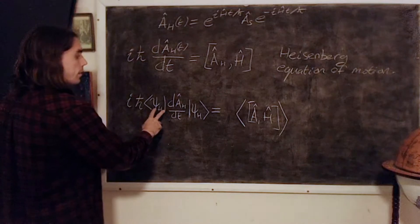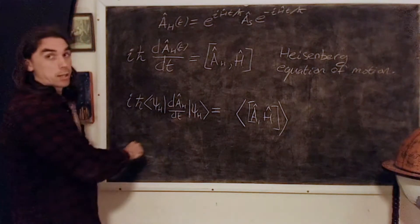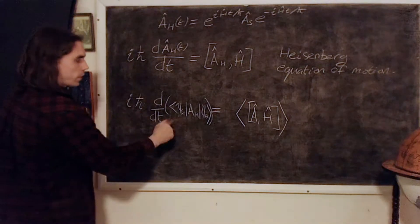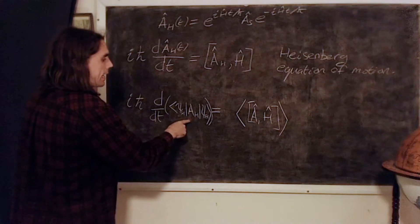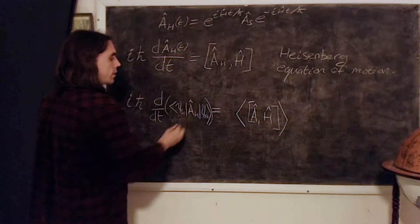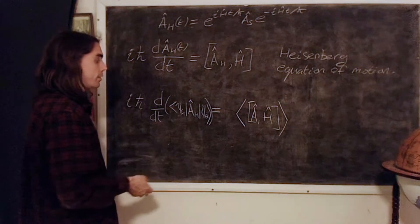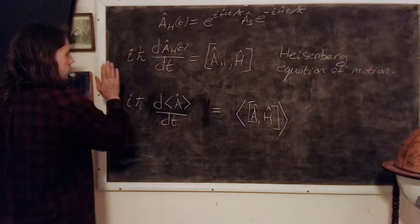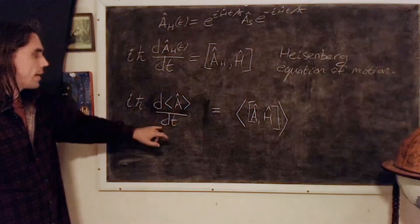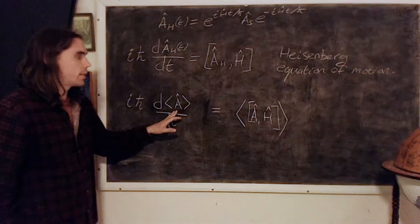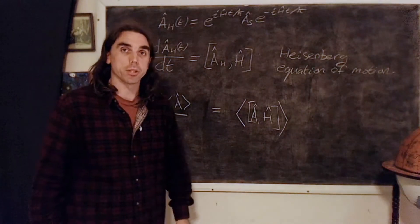Over here, we can bring the states within the time-derivative, because they're time-independent. But then we only have the expectation value of the operator A, written in the Heisenberg picture, but again expectation values are independent of picture. And so we have the result: iħ d⟨A⟩/dt, where A is an arbitrary operator, is equal to the expectation value of the commutator of A with the Hamiltonian.